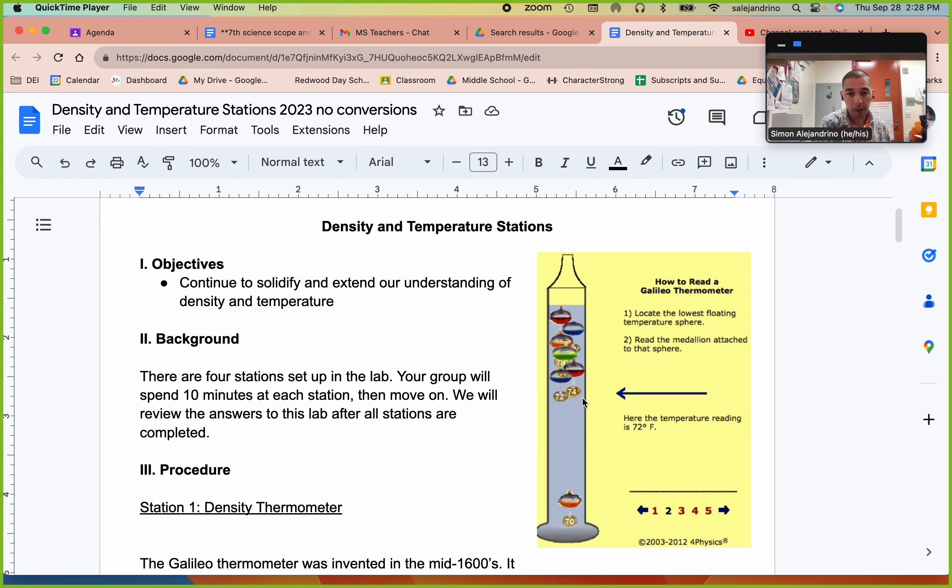So how does this guy work? When you apply a hairdryer to this tube, all of this liquid here starts to heat up. And as you know, when things heat up, the volume expands and the density goes down.